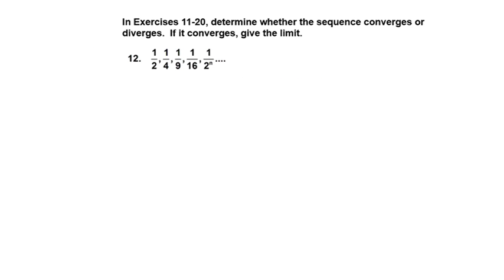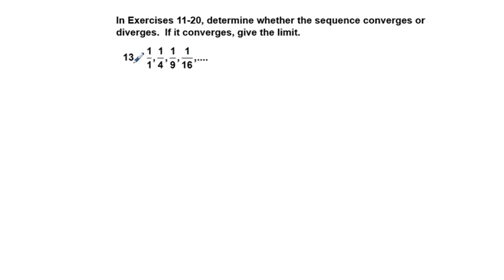We'll go to the next problem, which is problem 13. And this one we could rewrite as 1 over n squared. Because we would have 1 over 1 squared, which would be 1 over 1, 1 over 2 squared, which is 1 over 4, 1 over 3 squared.